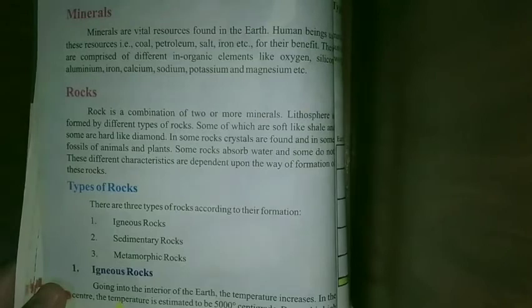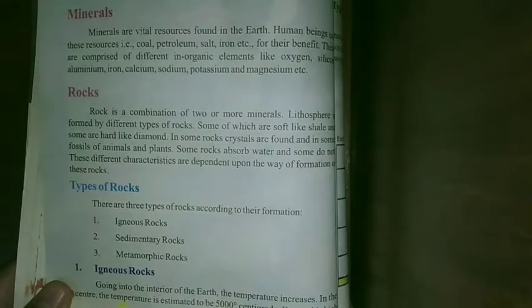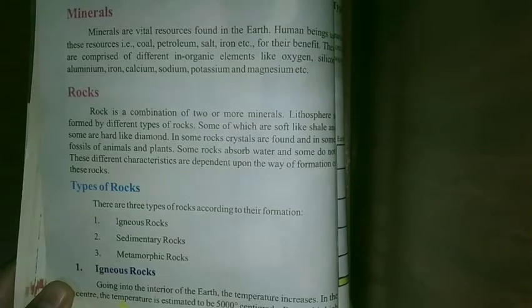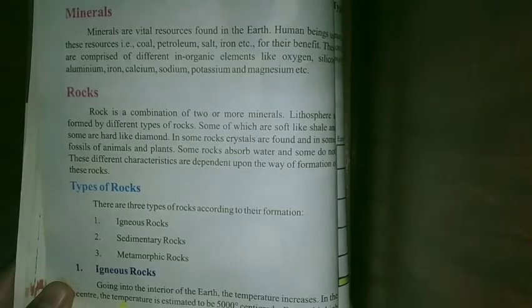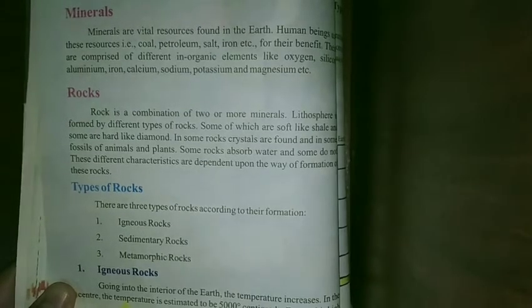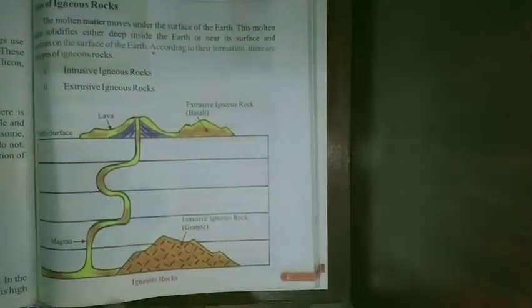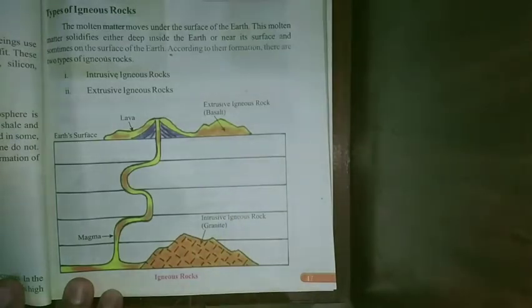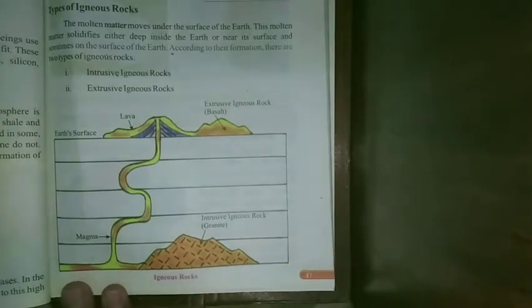So we will talk about types of rocks. There are three types of rocks according to their formation: igneous rocks, sedimentary rocks, and metamorphic rocks. Today we will talk about igneous rocks. If you see the diagram here, it shows something about igneous rocks, so kindly keep this diagram in front of you.